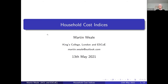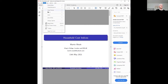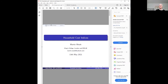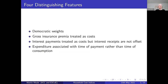Thank you very much. This paper is an expression of my views on the household cost indices, which the ONS is producing currently on an experimental basis, but I think in the not too distant future they will become cost indices published as official statistics. There are four major distinguishing features which separate these indices from the more conventional CPIH.